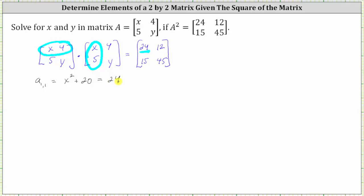So to solve for x and y we'll set up a system of four equations and then solve for x and y. Again, looking at the product, the element of 12 is in row one, column two, which means we multiply row one of the first matrix by column two of the second matrix and the result must be 12.